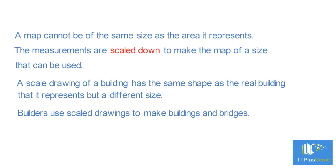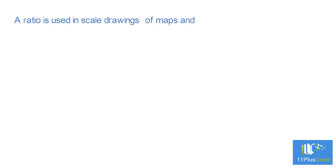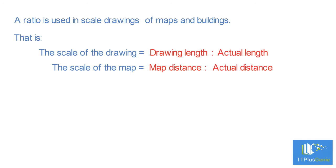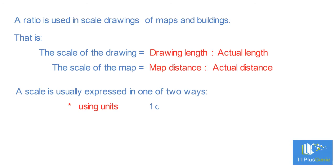A ratio is used in scale drawings of maps and buildings. The scale of a drawing equals drawing length to actual length. Likewise, map scale equals map distance to actual distance. A scale is usually expressed in one of two ways: using units, as in one centimeter to one mile, or without units, as in one to one thousand.